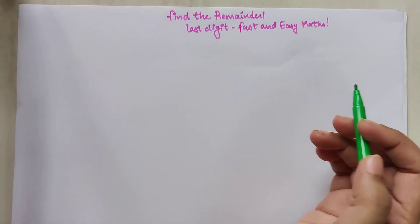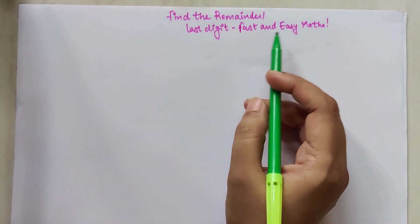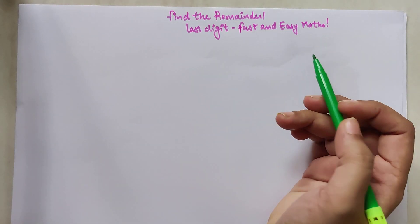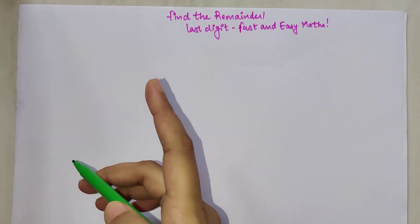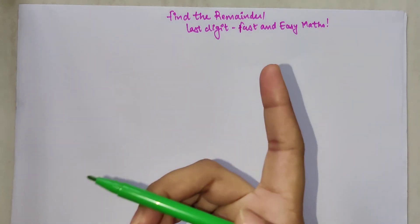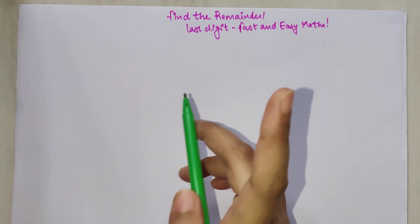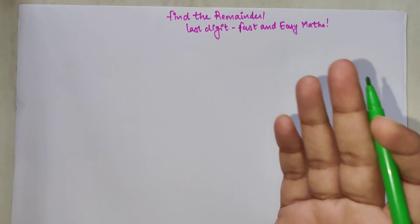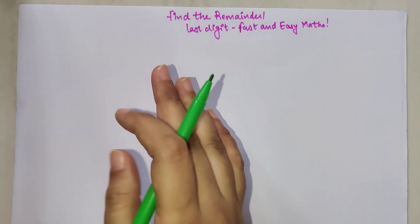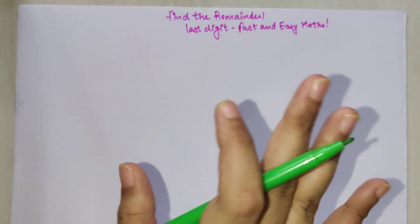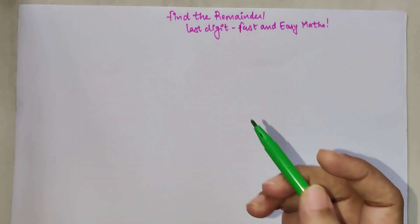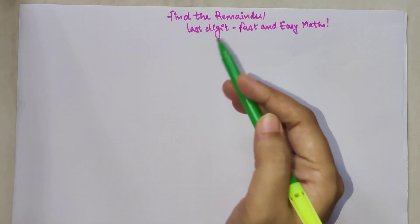Welcome everyone to my channel, Fast and Easy Maths, which is dedicated to giving you tips and tricks related to mathematics. Today we are going to do Part 2 of finding the remainders or finding the last digit of any number when it is divided by 10.